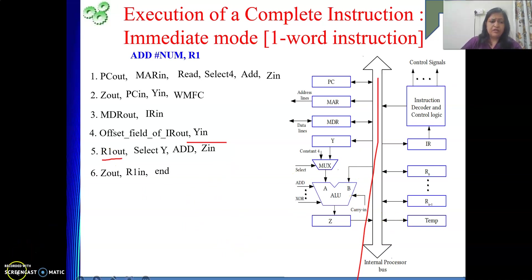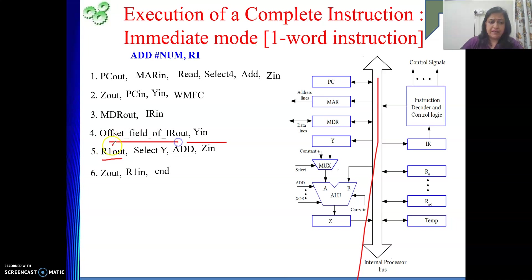So here we have done: the address or offset part of the instruction is containing the data. We added it with register R1 and the result is stored in R1.